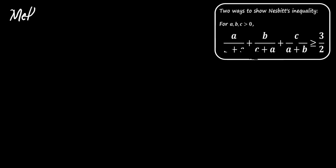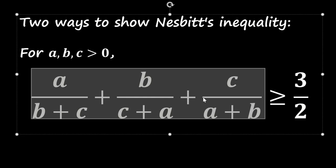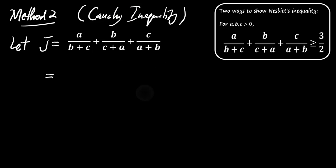Let's move on to the second method, the Cauchy-Schwartz inequality. We start by expressing J again in its original form. To apply Cauchy-Schwartz, we rewrite each term like this.